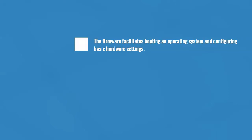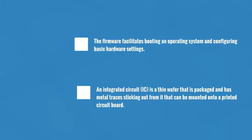Firmware is the software that is programmed into electrically erasable programmable read-only memory, or EEPROM. In this case, the firmware facilitates booting an operating system and configuring basic hardware settings. An integrated circuit, or IC, is what you would likely think of as a stereotypical computer chip — a thin wafer that is packaged with metal traces sticking out, that can be mounted into a printed circuit board.